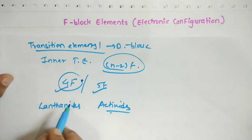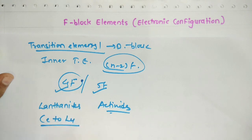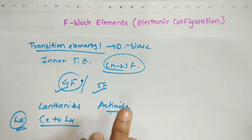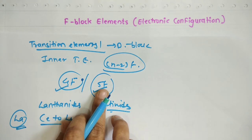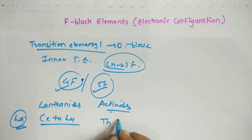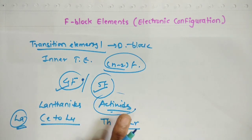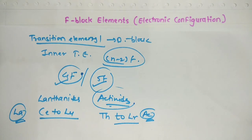The lanthanide series is considered from cerium to lutetium. The name lanthanides applies to these elements because they arrive immediately after lanthanum. Similarly, the actinide series — the name actinides falls on those elements because they arrive immediately after actinium. That is why this series is known as the actinide series.